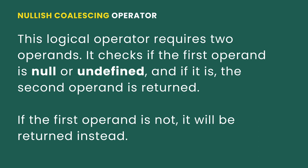The nullish coalescing operator is a logical operator which requires two operands. It checks if the first operand is null or undefined. If the first operand is null or undefined, the second operand is returned; but if the first operand is not null or undefined, then the operator returns the first operand.